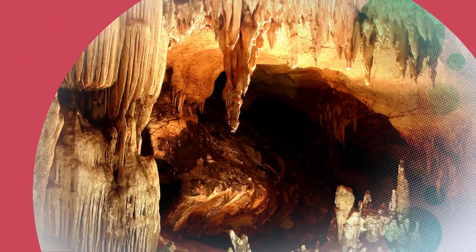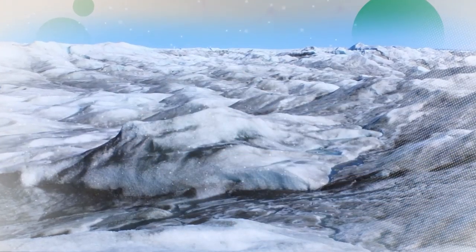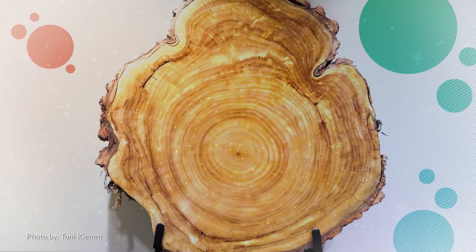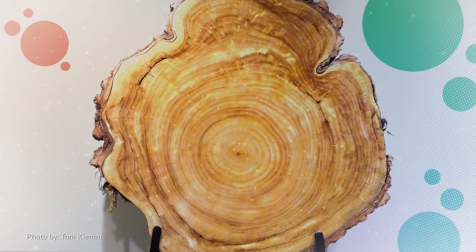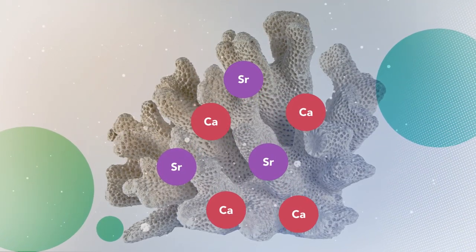These archives can be living organisms or formations from natural processes like cave deposits, glaciers, and ice sheets. Proxies can be physical properties of an archive, like the width of a tree ring, or a chemical property like the strontium to calcium ratio in a skeleton.